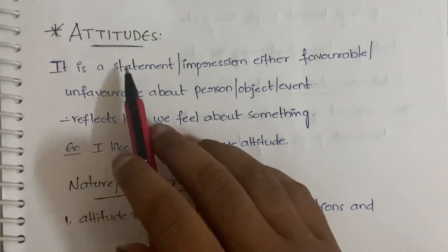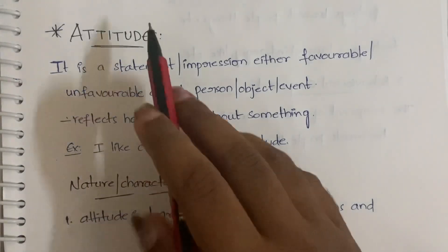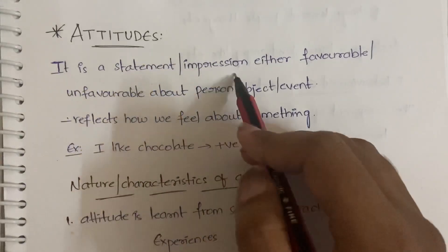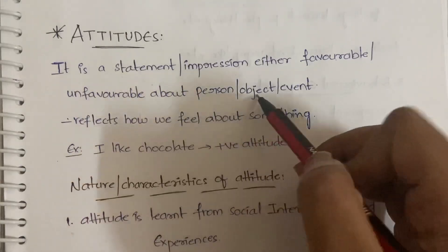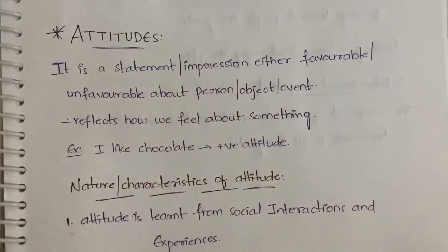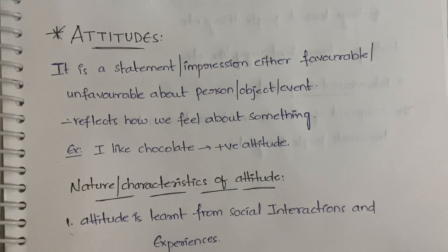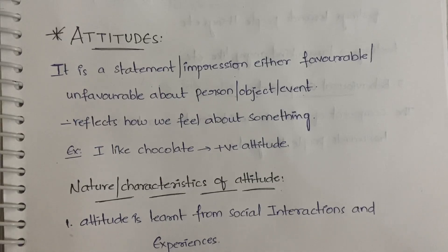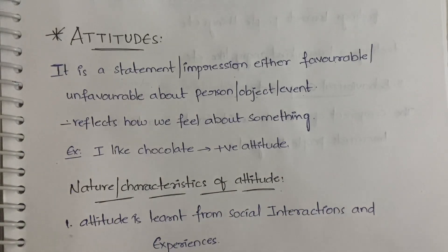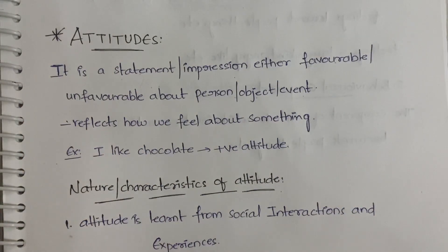Let's get into the video. Attitude means it is a statement or impression that could be either favorable or unfavorable about a person, an object, a thing, or an event — anything living or non-living. You are forming an impression, forming an opinion, giving a statement about that — which could be favorable or unfavorable. Basically we have two types of attitude: positive attitude and negative attitude.